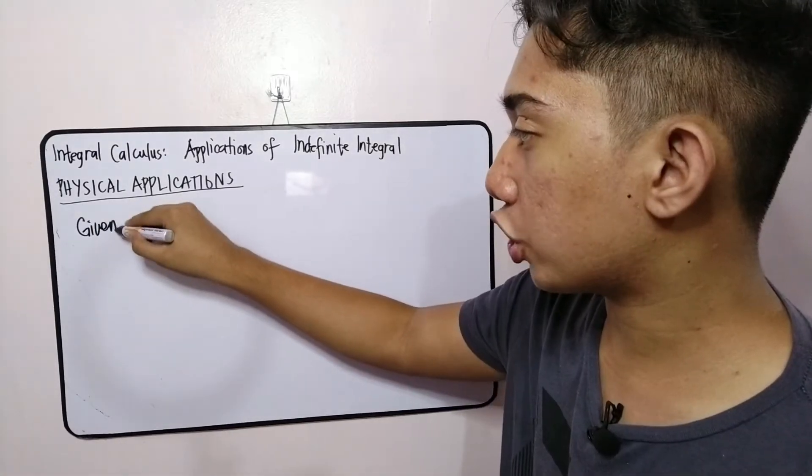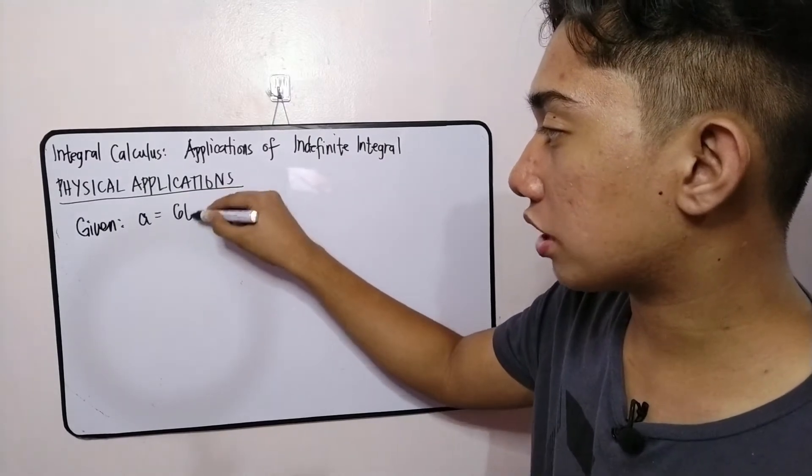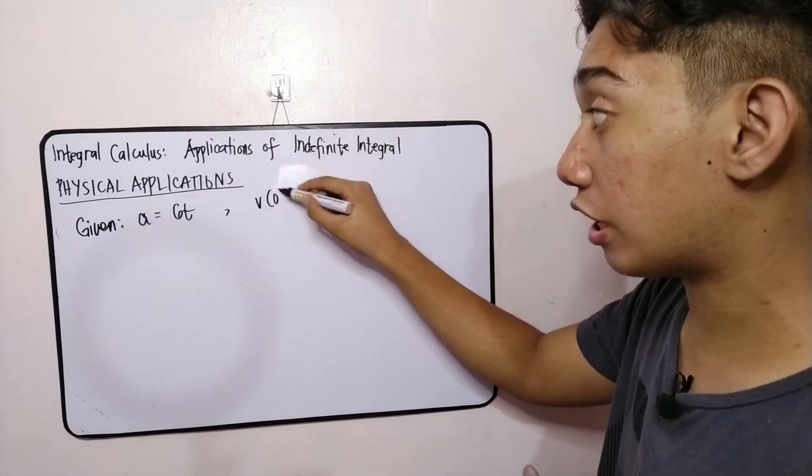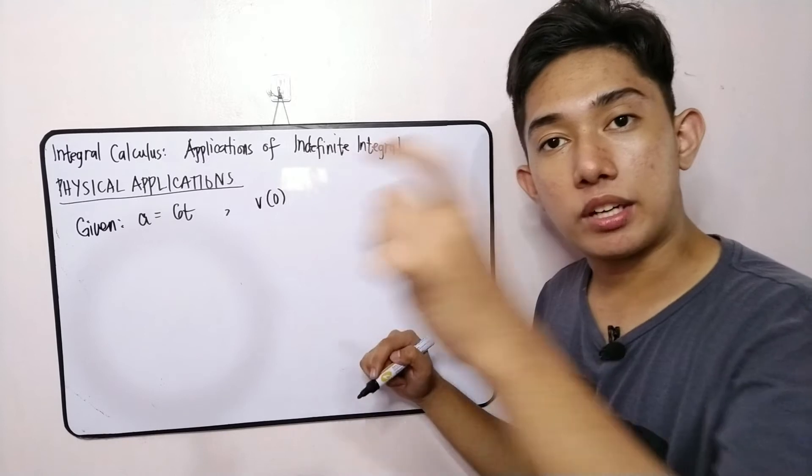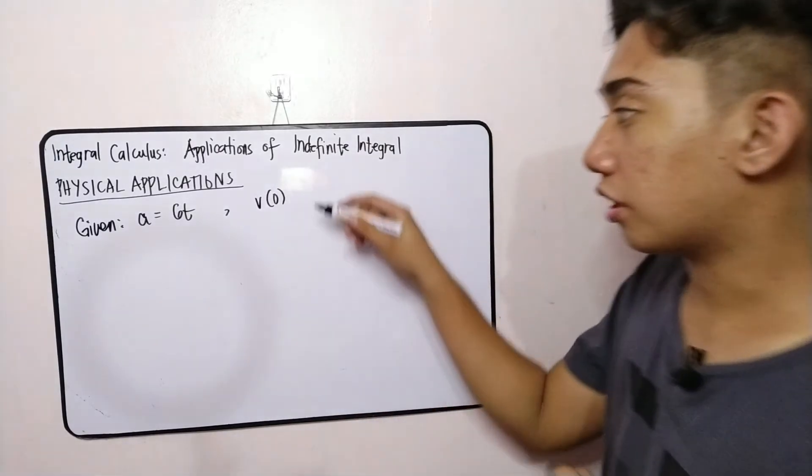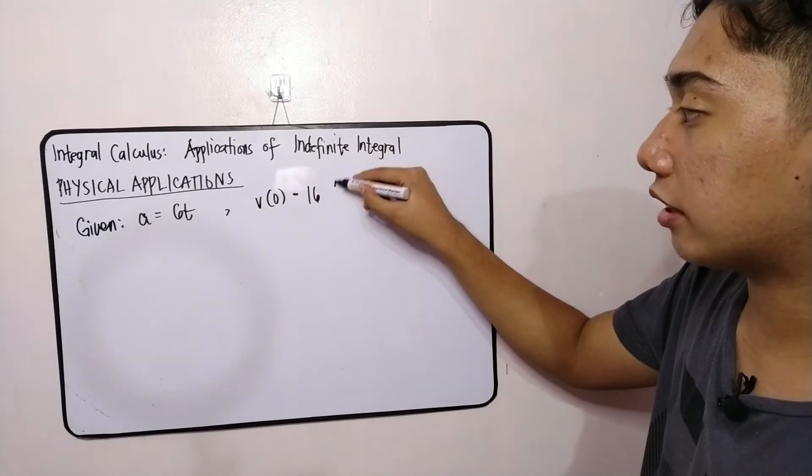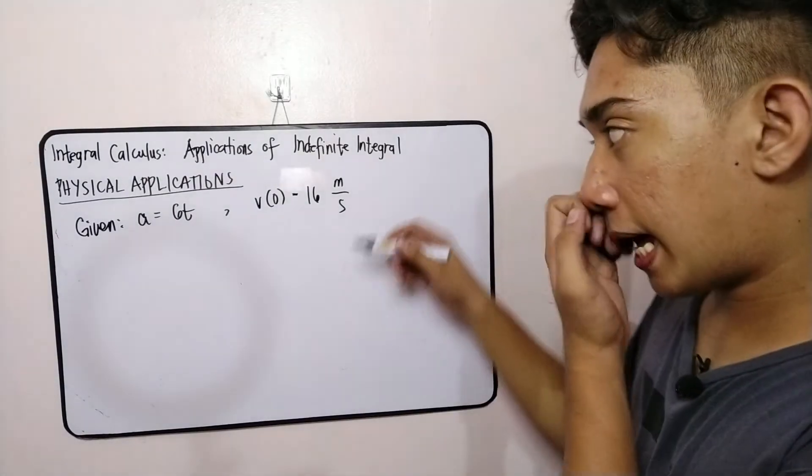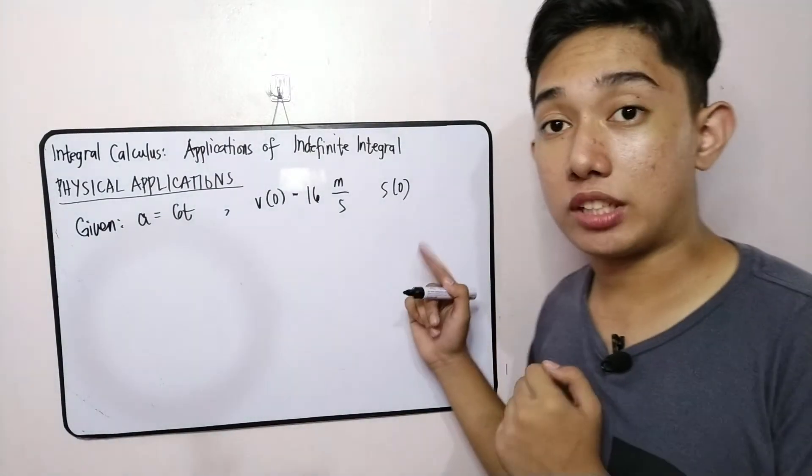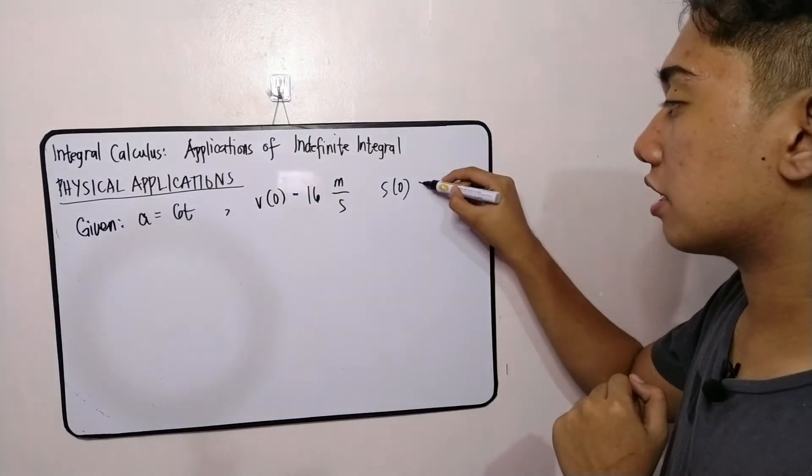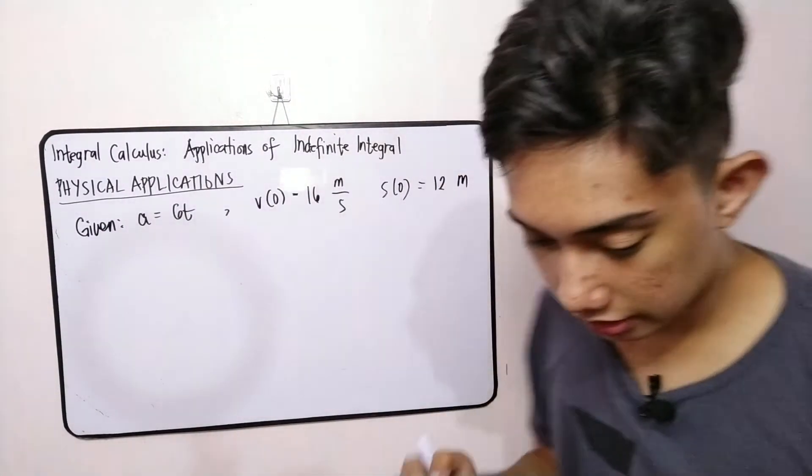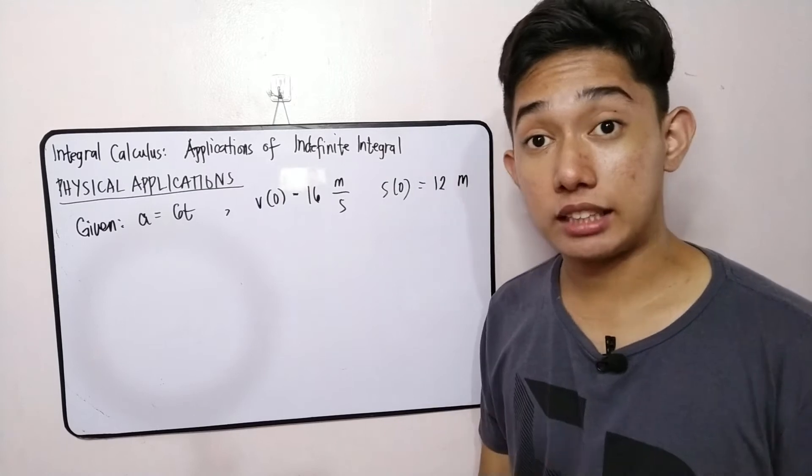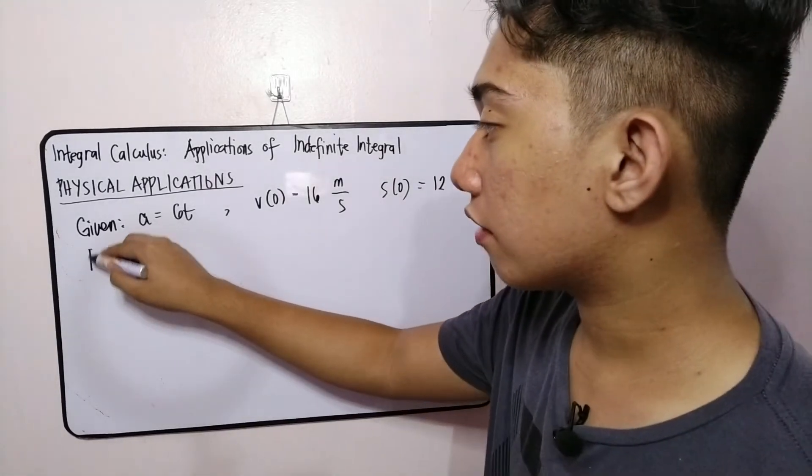For the first problem, we are given an acceleration equation at any time t as a equals 60. We are also given an initial value, which is the velocity at rest or velocity at zero. Take note of that word, when it is at rest, you always start at zero. So the velocity at rest is 16 meters per second. Then, if your s of zero, when you say s of zero, that is your distance, is 12 meters at rest also. You will find the displacement and the velocity function at any time t.